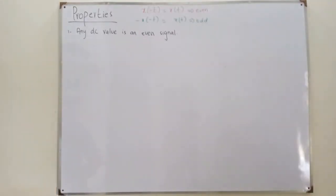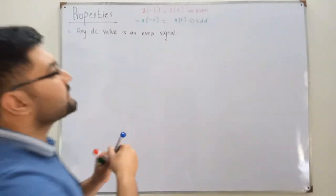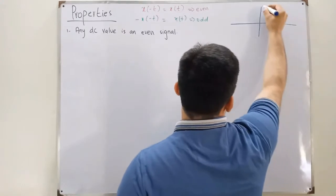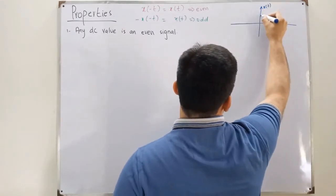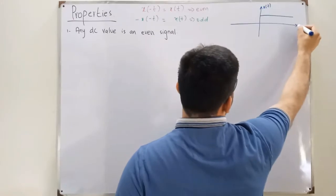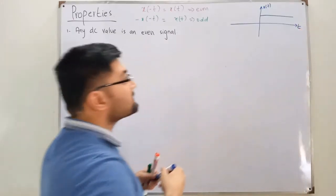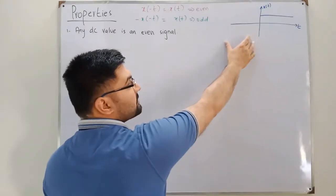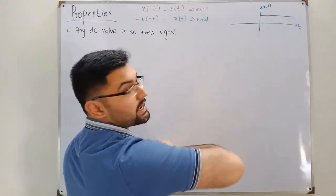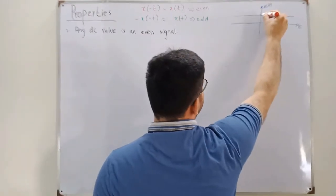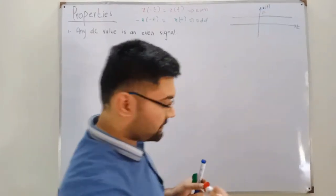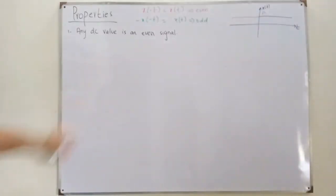So any DC value is an even signal — let's see this through an example. Let's say we have a function X(t) equal to 5. If you reverse this signal, taking a mirror image about the y-axis, you would have the same value. The magnitude is 'a' for negative T and positive T alike, so it doesn't matter — this confirms that a DC value is an even signal.